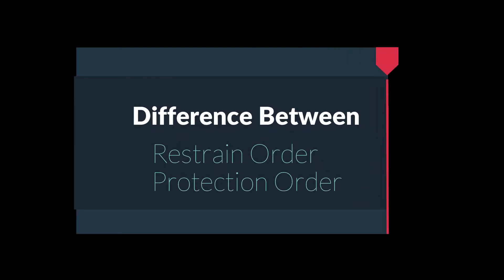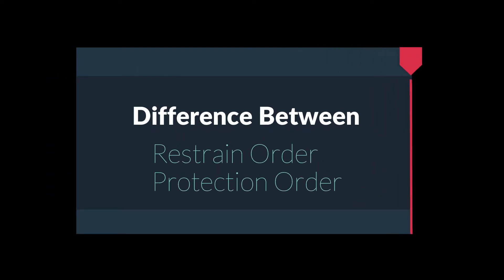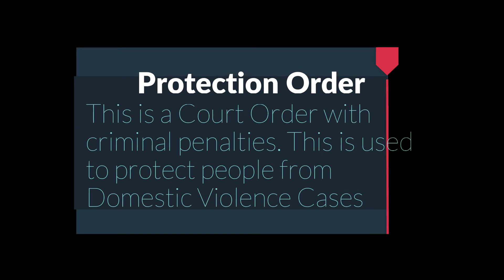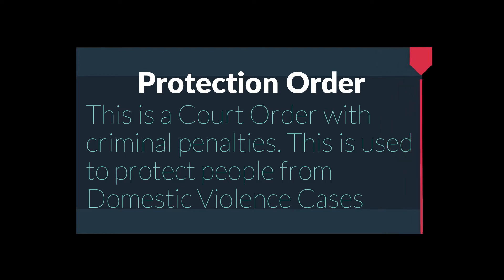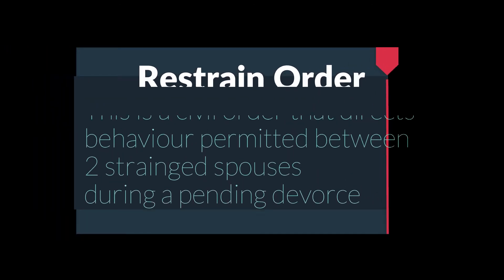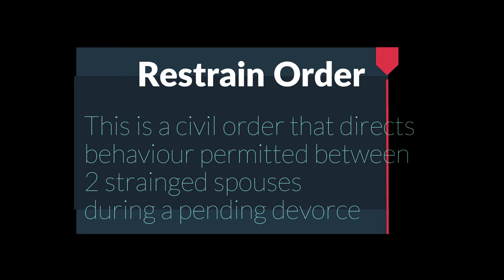The difference between a Restraint Order and a Protection Order: A Protection Order is a court order with criminal penalties, used to protect people from domestic violence cases. A Restraint Order is a civil order that directs behaviour permitted between two estranged spouses during a pending divorce.